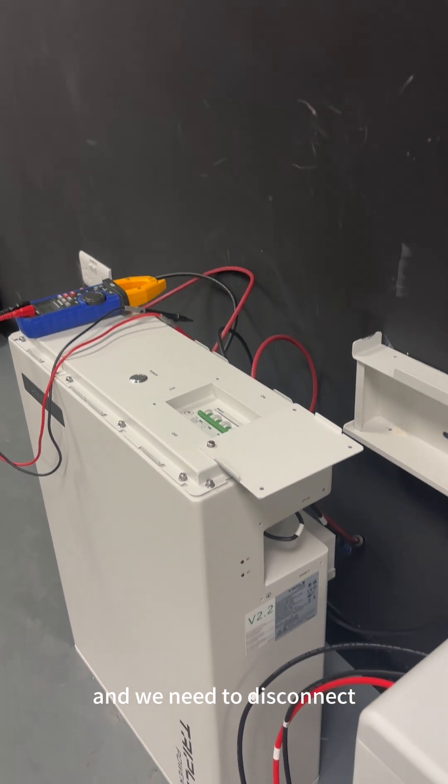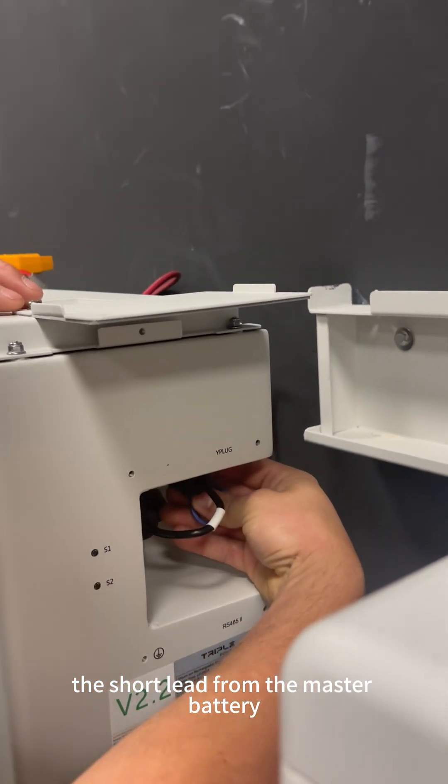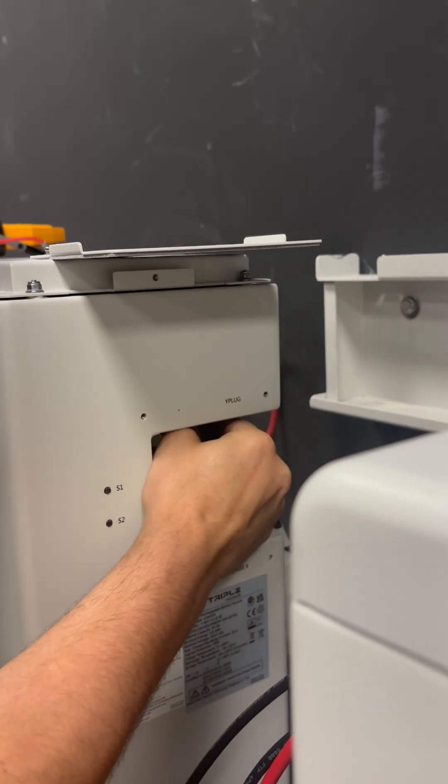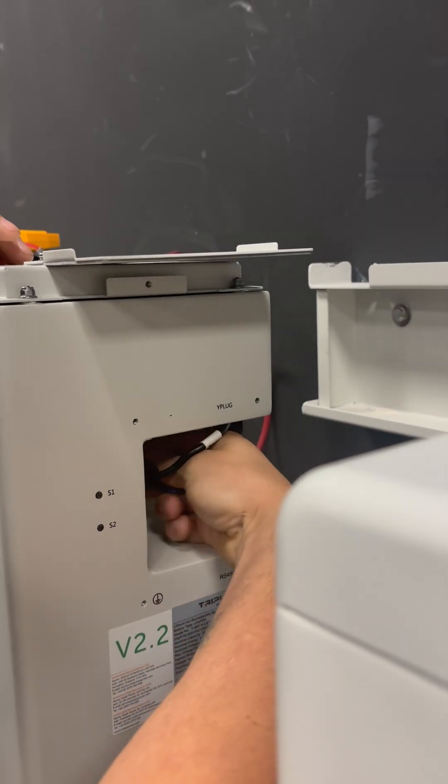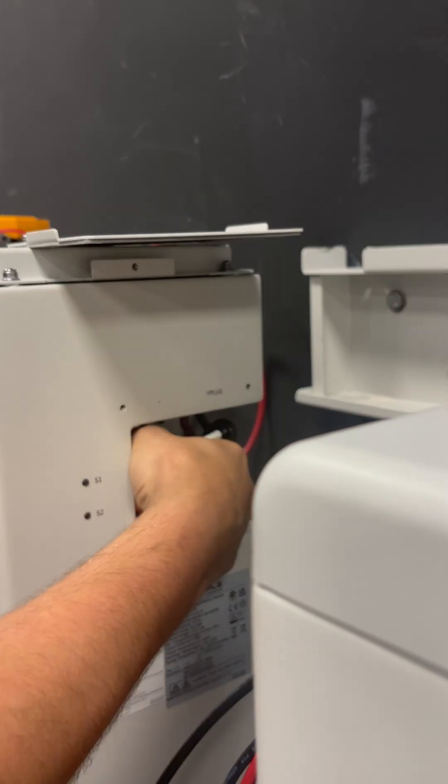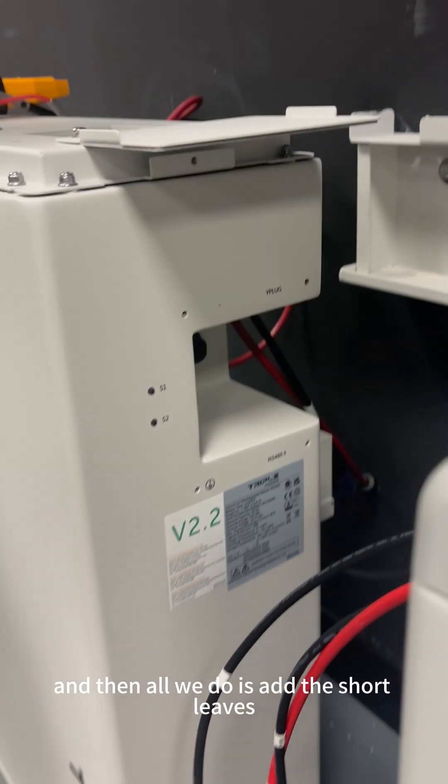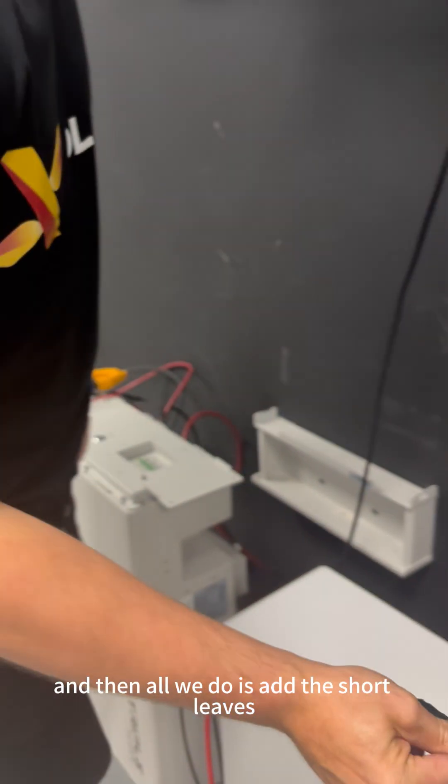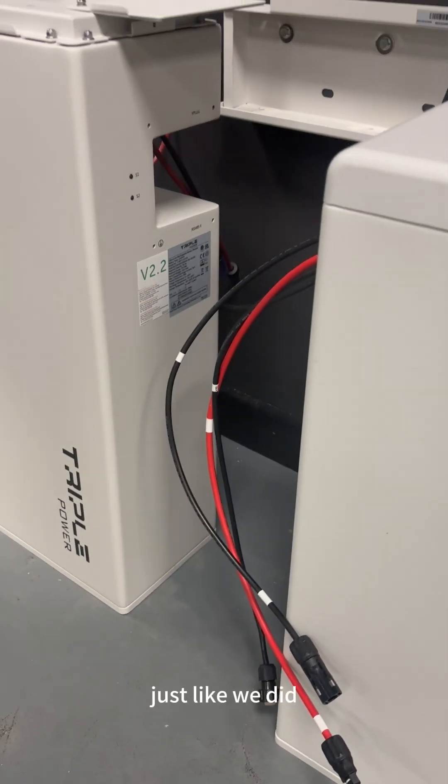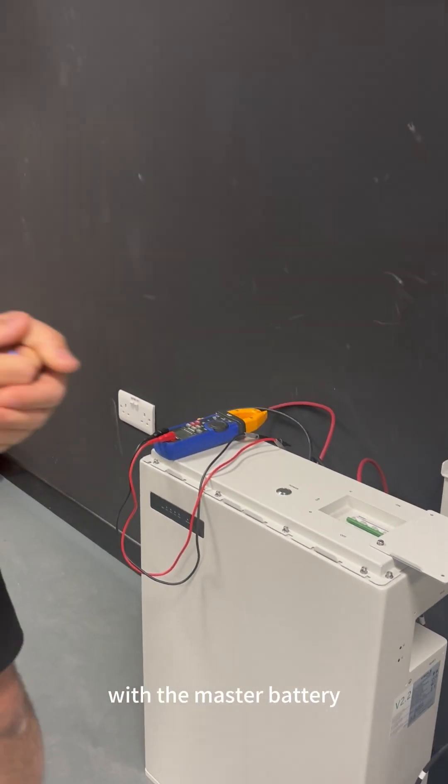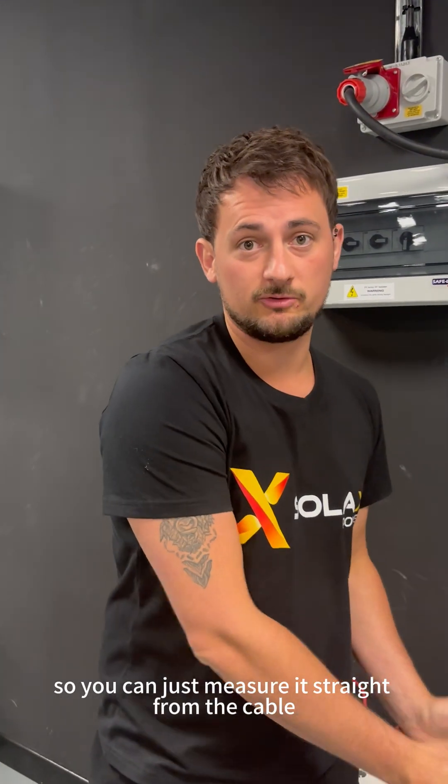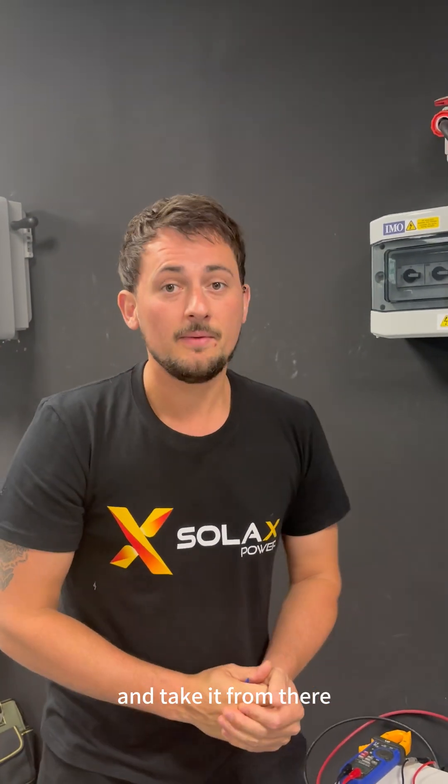We need to disconnect the short lead from the master battery. Then all we do is add the short lead into the slave battery and measure the voltage just like we did with the master battery. But because it's a slave battery it has no dip switch, so you can just measure it straight from the cable and take it from there.